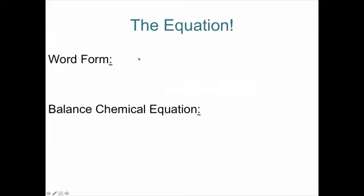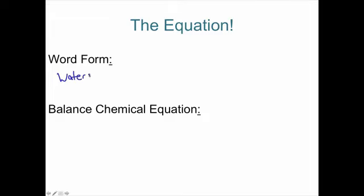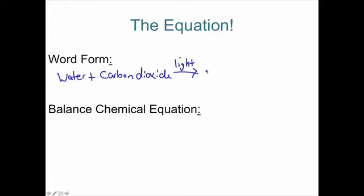Now the equation. Try to write it down on your own first — pause the video and then come back. The word form for photosynthesis: it doesn't matter which reactant you put first, as long as they're on the left side of the arrow. So: water plus carbon dioxide, with light written over the arrow, arrow, then our products — tear apart carbon dioxide and water and rearrange them into glucose and oxygen.